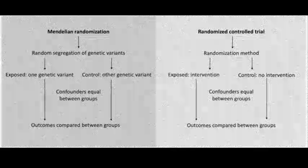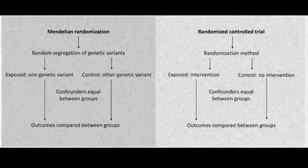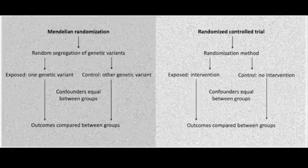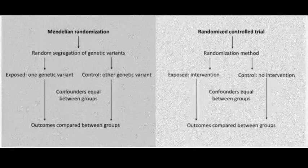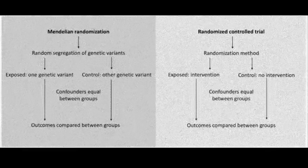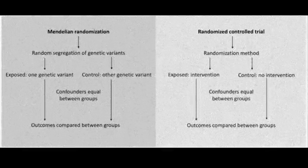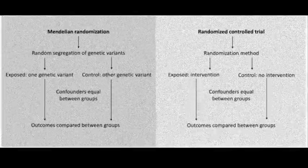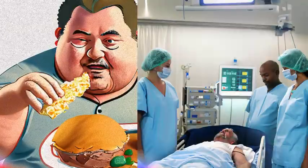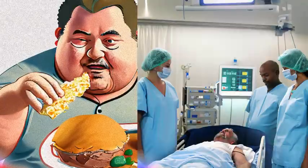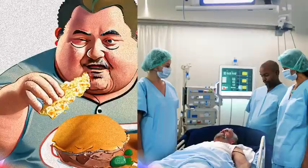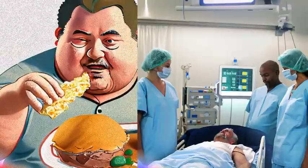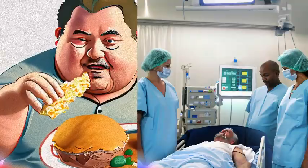Mendelian randomization can be used to test the effects of long-term exposures — like diet, cholesterol, and blood sugar — on late health outcomes like heart disease, cancer, and diabetes. These studies are unaffected by confounding factors because gene allocation is random and occurs before any disease develops.